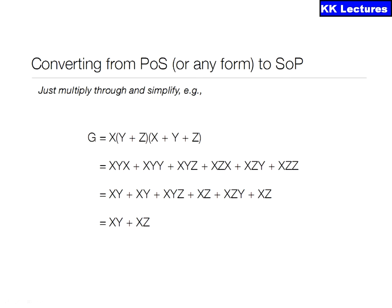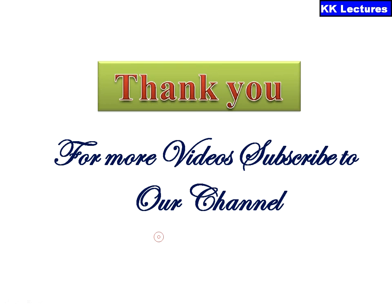Converting POS to SOP is also straightforward using the distributive property: simply multiply the terms and minimize any repeated terms, and you will get the final result in SOP form.